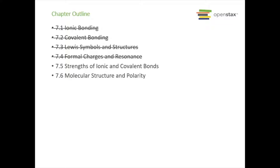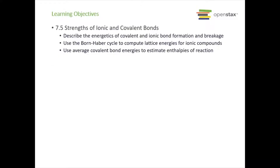These two sections are going to be a lot of examples, as it's not very easy to just tell you how to do things — it's a lot easier to go through it. So bear with me and make sure you come up with any questions you may have. Starting with section 7.5, Strengths of Ionic and Covalent Bonds, we are going to be describing the energetics of covalent and ionic bond formation and breakage using the Born-Haber process to compute lattice energies for ionic compounds and use average covalent bond energies to estimate enthalpies of reaction.